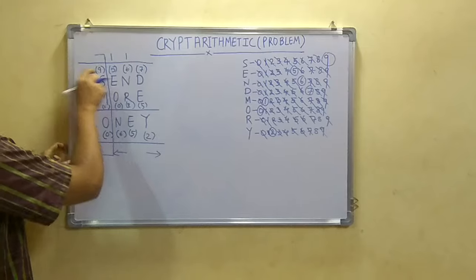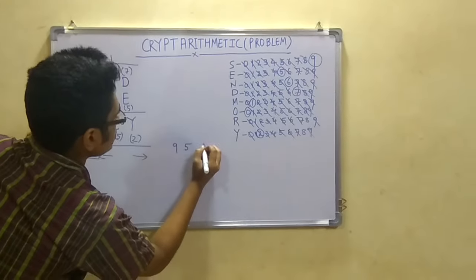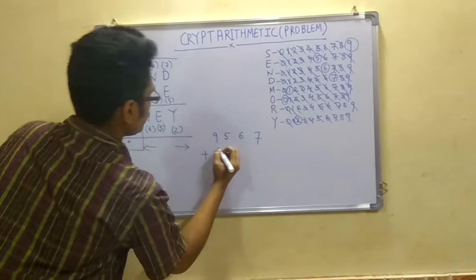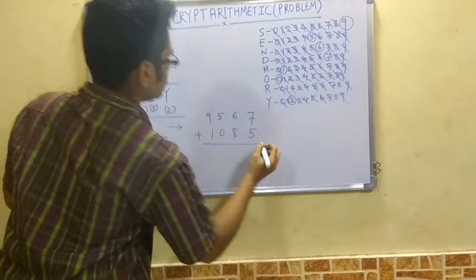How to tally this? Just add the numbers which I have written in brackets. So like 9, 5, 6, 7 plus 1, 0, 8, 5. Now you have to add this. Simple addition. 7 plus 5 is 12. Carry 1. 15. 1, 6. 1, 0.